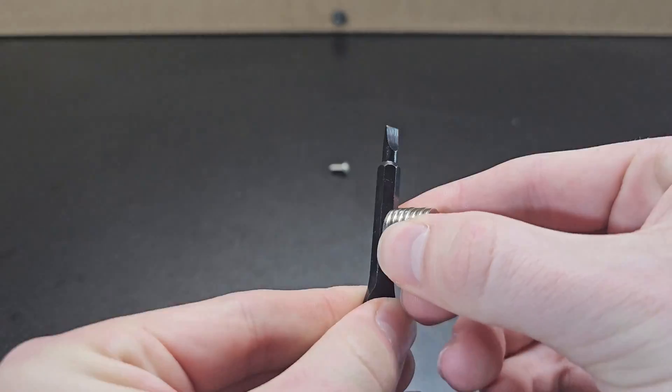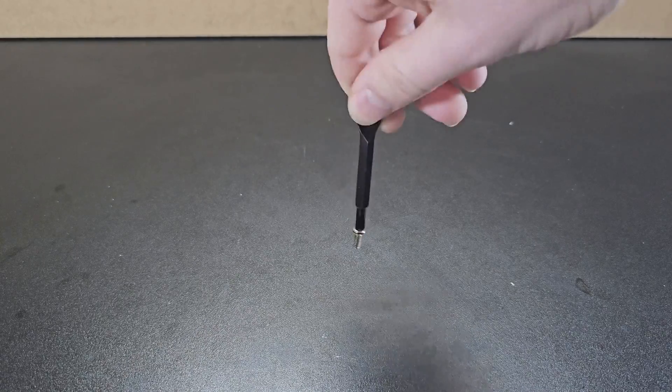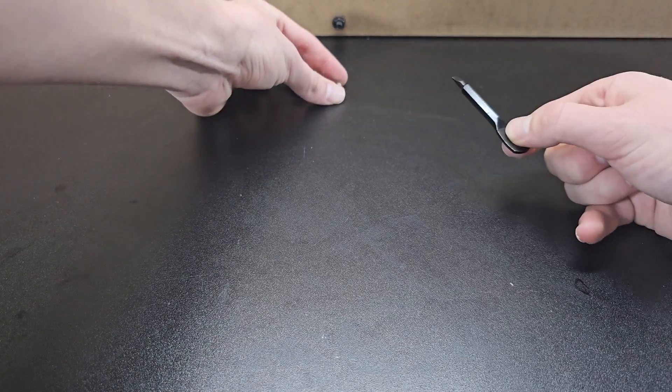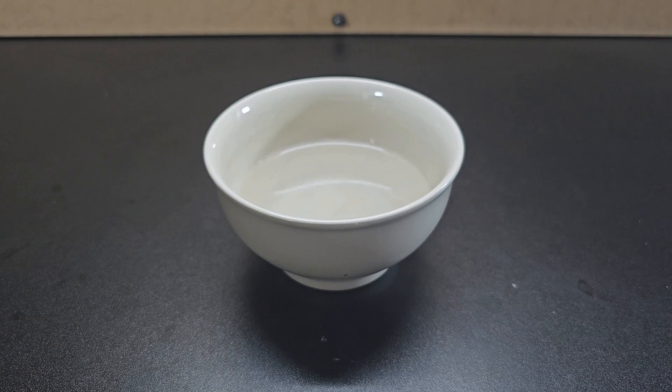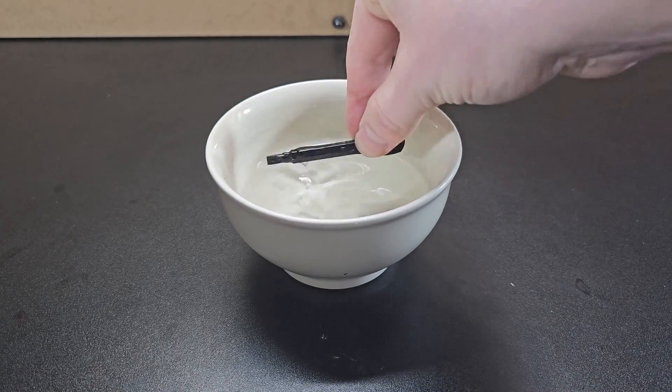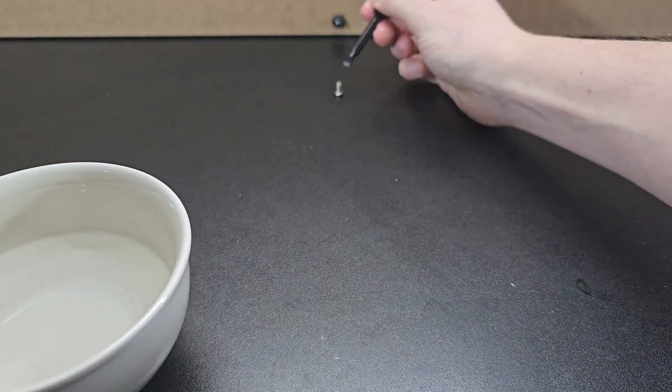Next, you hopefully remember from last round that you can magnetize a screwdriver by rubbing a magnet on it, but then if you want to demagnetize it for whatever reason, you can simply dip it into water and the polar water molecules will remove the magnetic alignment.